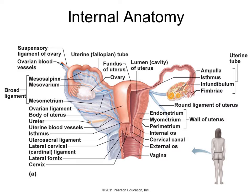The uterus is composed of multiple layers in its walls. The opening of the uterus to the vagina is the cervix. The vagina is basically the tube that connects from the uterus down to the exterior.